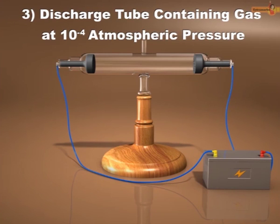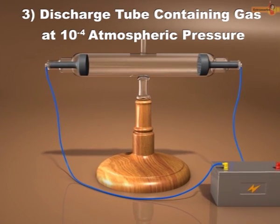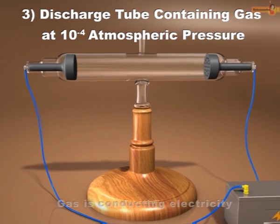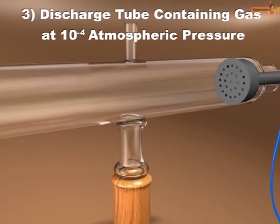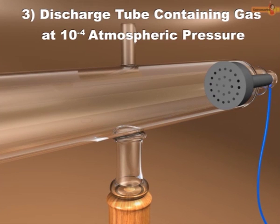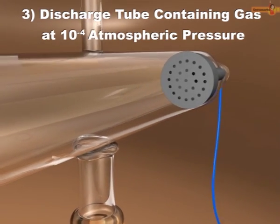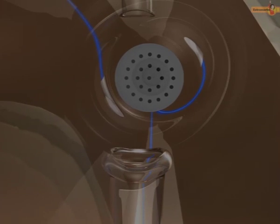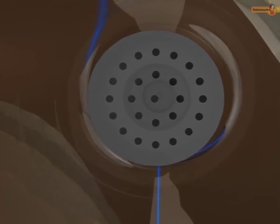When pressure is further reduced to about 10 to the power minus 4 atmospheres, the glow between the electrodes disappears but the gas continues to conduct the electricity. This flow of current from cathode to anode can be checked by using a perforated anode. When these rays after passing through the anode strike the zinc sulfide coating, a greenish glow is observed on the glass wall.